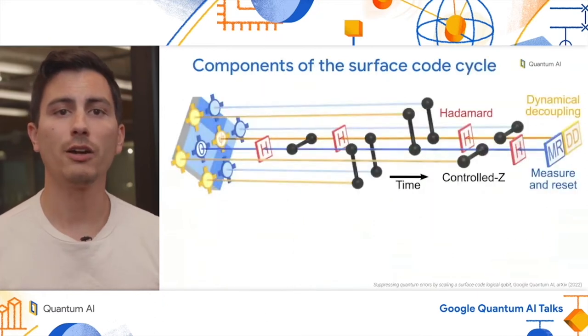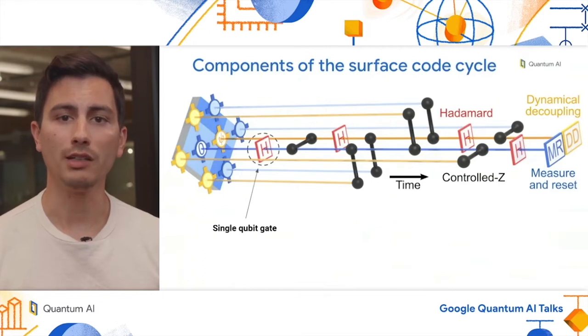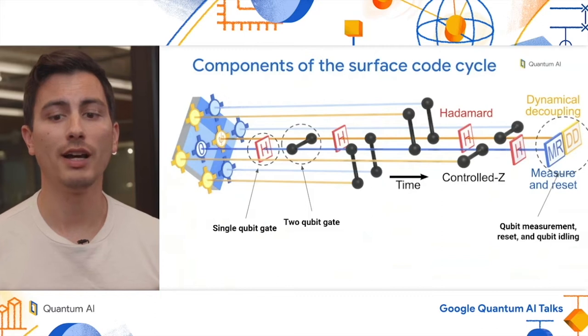So what are the components of an error correction circuit? Let's break it down. Well, there are single qubit gates, such as the Hadamard gate shown here, two qubit gates, such as the CZ gate shown here, and there's qubit measurement, reset, and data qubit idling, as shown here.